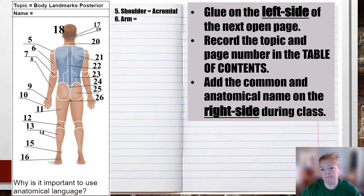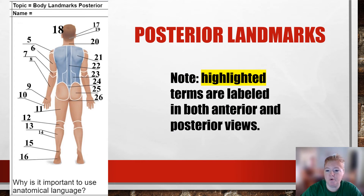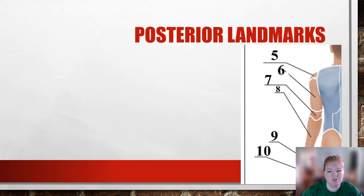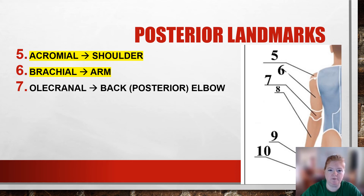Now we're going to look at the posterior view. Same thing — you're going to write the anatomical and the common name. The highlighted terms appear in both views, so I'm going to skip over those since they're already done on the anterior view.